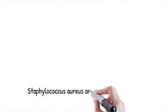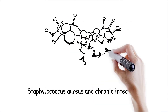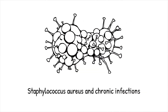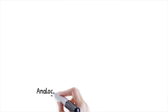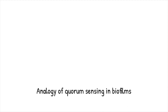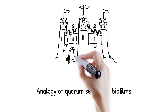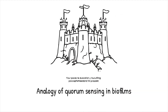The bacterium Staphylococcus aureus uses quorum sensing to regulate biofilm formation, contributing to its ability to cause chronic infections. Quorum sensing in biofilm formation is like coordinating the construction of a fortress — bacteria only build it when enough of them are present to defend it.